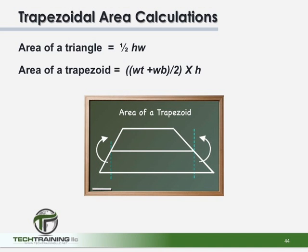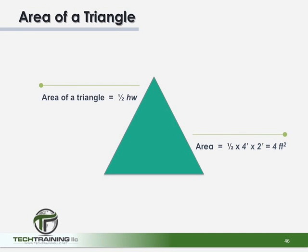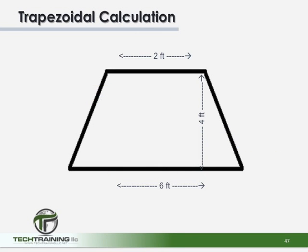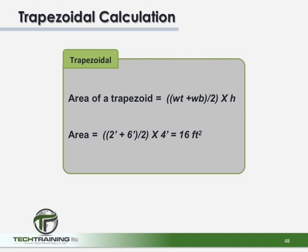When calculations must be made by hand, a triangle or a trapezoid area can be computed using these equations. If we had a triangle that is 4 feet at the bottom and has a height of 2 feet, we could quickly calculate the area as 4 square feet. Or, let's assume we had a trapezoid that was 6 feet wide at the bottom, 2 feet wide at the top, and had a height of 4 feet. Using our equation — the width at the top plus the width at the bottom divided by 2, times the height — we should get a result of 16 square feet.